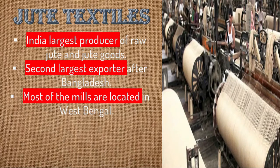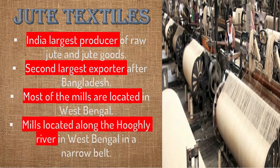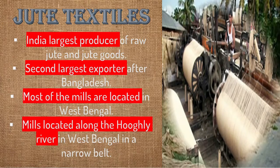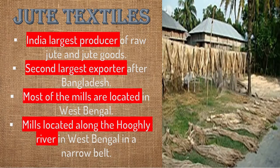70 percent of the jute production comes from West Bengal and the remaining from other parts of the country. Most of the jute mills are located along the Hooghly River in West Bengal, which is a narrow belt and quite suitable for the growth of jute.